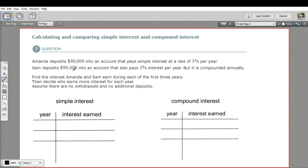In this problem, we are comparing two different types of interest, simple interest and compound interest. In this particular problem, it says Amanda deposits $90,000 into an account that pays simple interest at a rate of 3% per year.